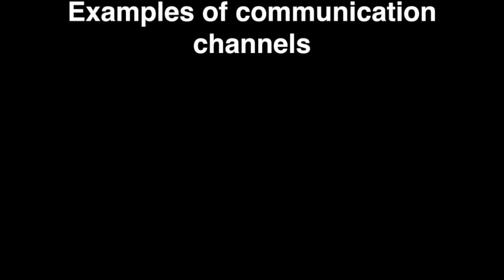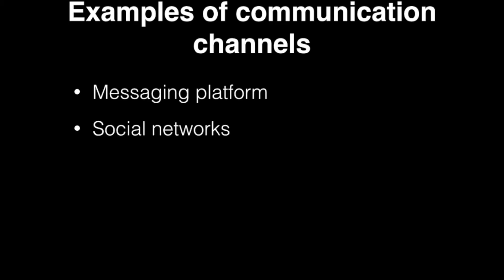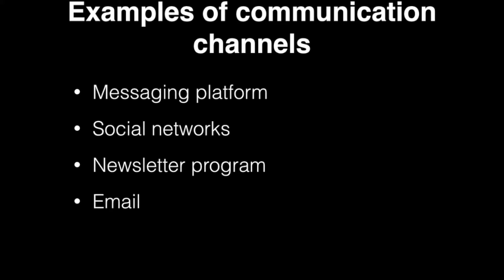The first step is to divide all your contacts into a few groups depending on the way you use to communicate with them. It can be a messaging platform, for example WhatsApp, Viber, Messenger, Telegram, WeChat and so on; a social network like Instagram, Facebook or LinkedIn; a newsletter program that you use to communicate with your subscribers, for example Mailchimp, Constant Contact, ConvertKit or MailerLite; email; or finally, a simple phone call.